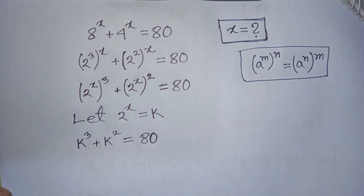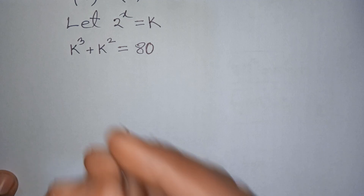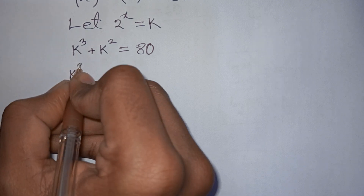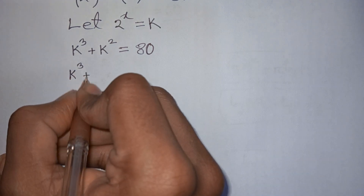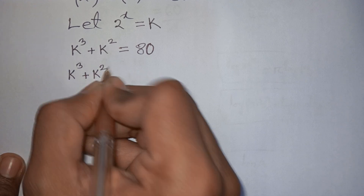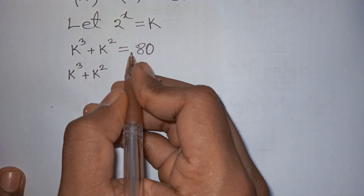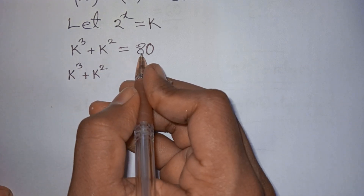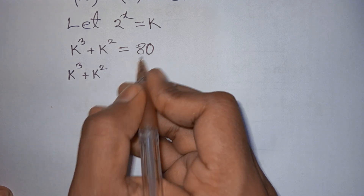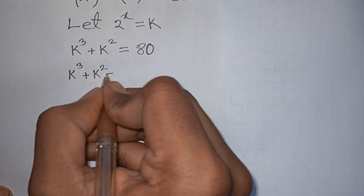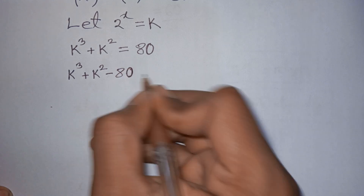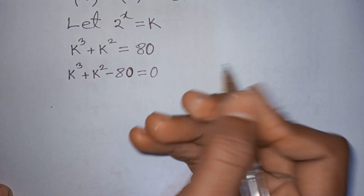In the next step, we have k power 3 plus k power 2, and then taking 80 to the left side, this will be k power 3 plus k power 2 minus 80 is equal to 0.